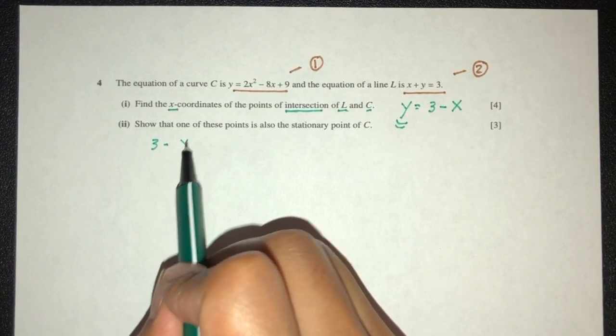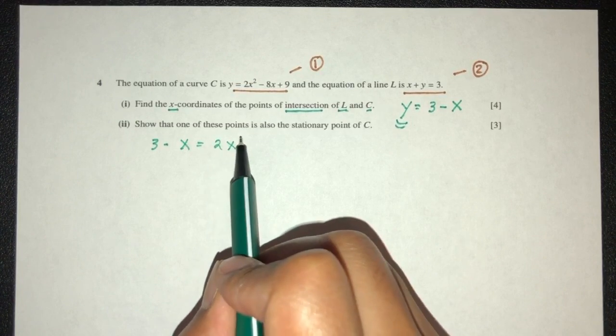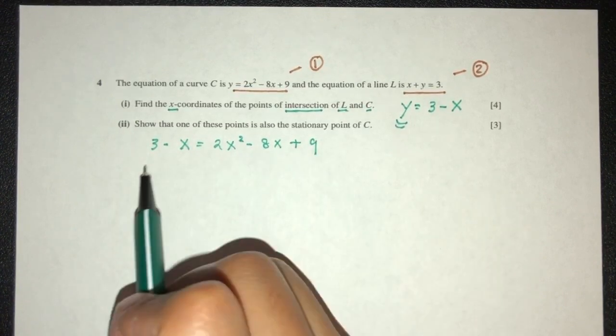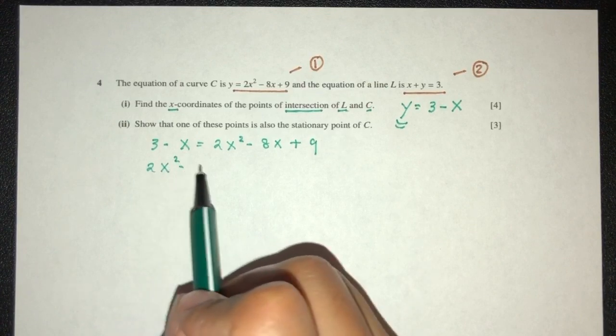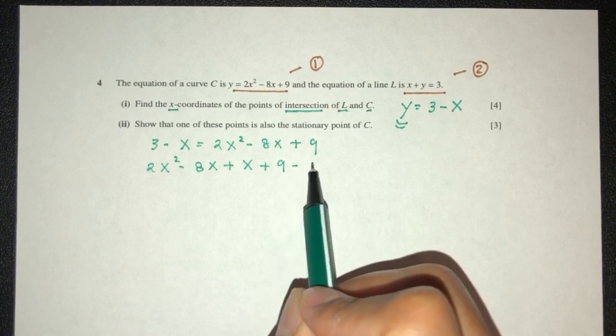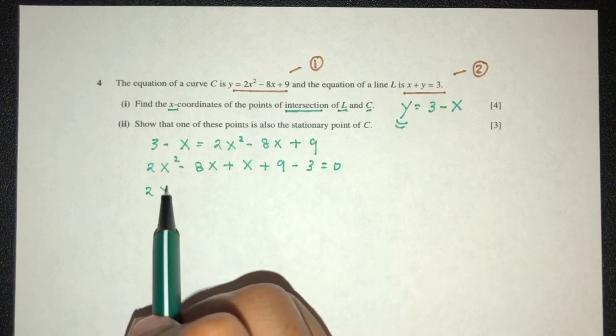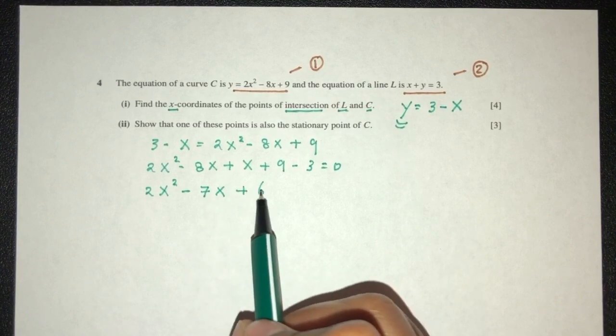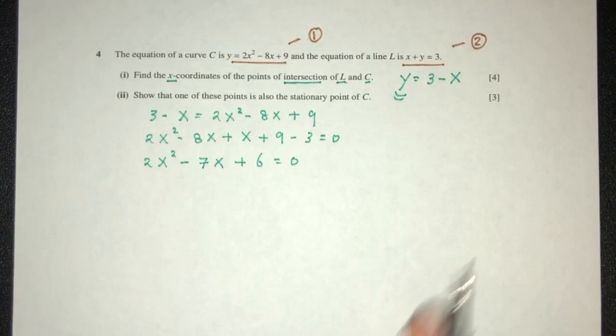You will have 3 minus x is equal to 2x squared minus 8x plus 9. Send everything to one side. You will have 2x squared minus 8x plus x plus 9 minus 3 is 0. So 2x squared minus 7x plus 6 will be 0.